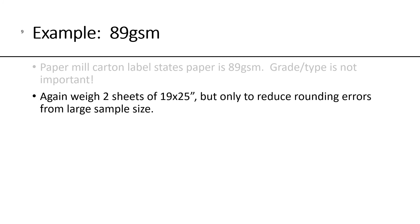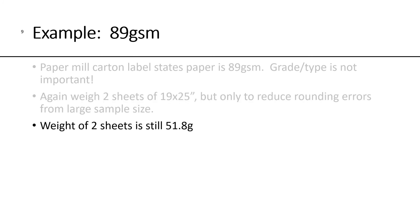Let's take a look at another example here, but this time for 89 GSM. The label on the paper says the paper is 89 GSM. We don't have to worry about the grade or the type of paper because in grammage, the size is always A0. That's the advantage of it. It's not confusing. We're still going to weigh those two sheets of 19 by 25. It still stays the same weight, 51.8 grams.